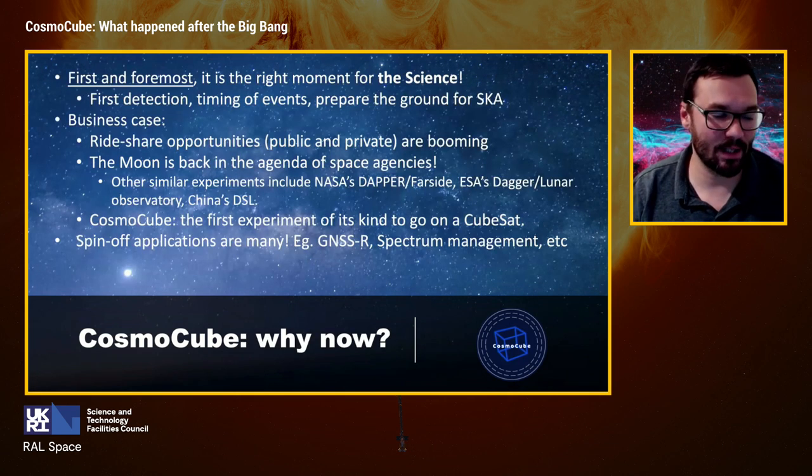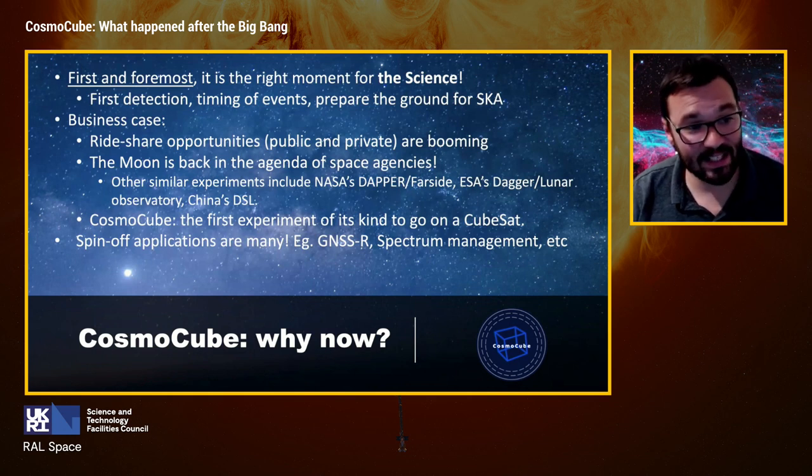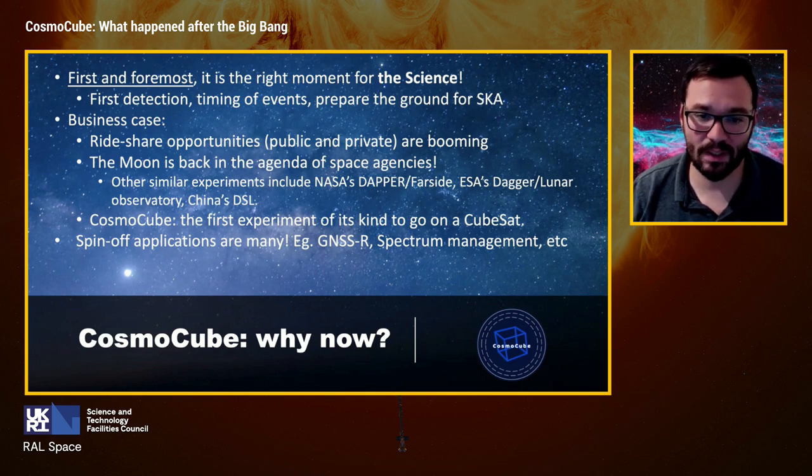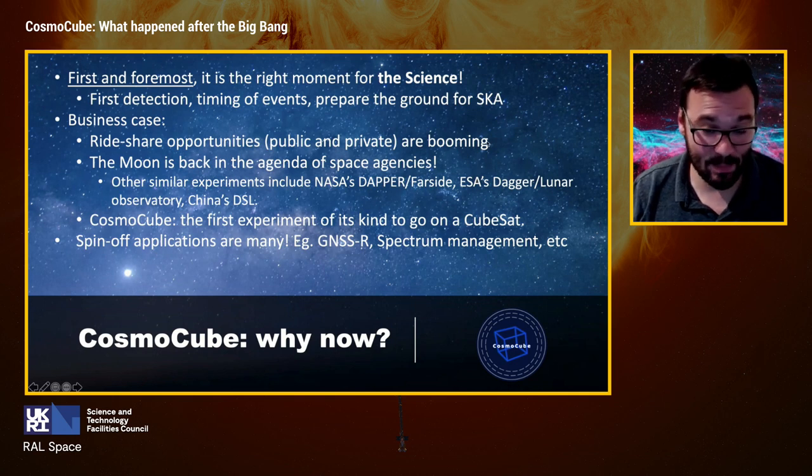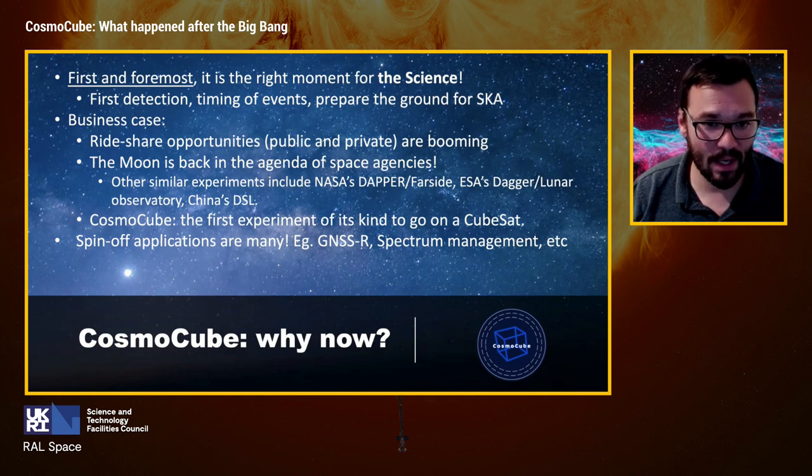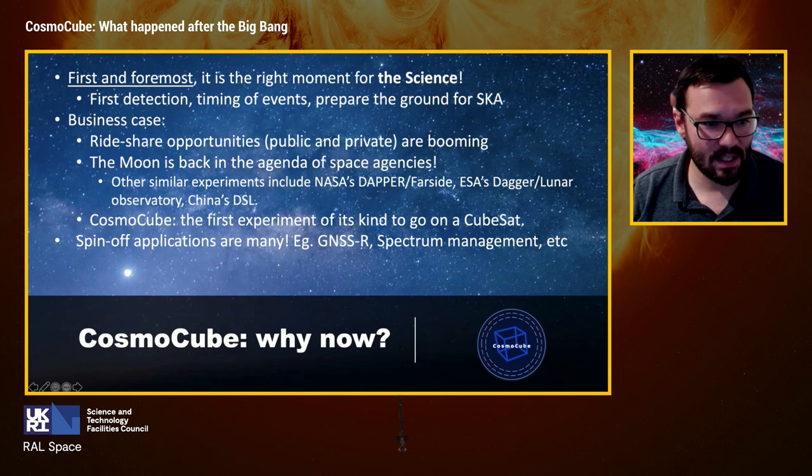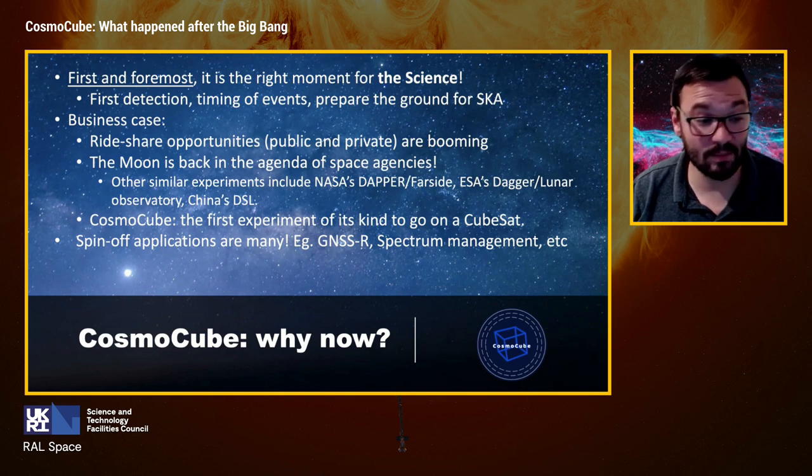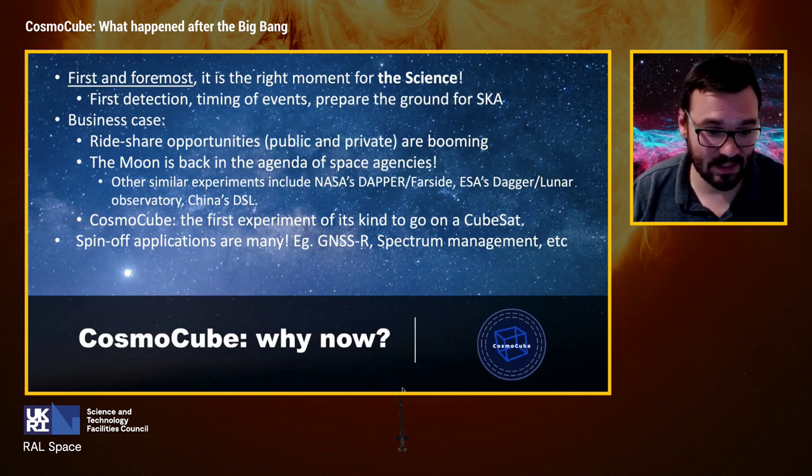Now, why now? Why are we proposing this now? Well, first and foremost, it is the right moment for the science. A first detection, probably happening very soon if it hasn't happened already, needs a confirmation or needs to be detected, that 21-centimeter signal, to be able to time the events and to prepare for what super telescopes, like the Square Kilometer Array, will try to do in the future, like make images of these epochs of the universe. Plus, there is a very strong business case. Riser opportunities, public and private, are booming. The Moon is back in the agenda of space agencies. Similar experiments are being proposed by NASA, ESA, and other countries. With the special note here that CosmoCube is the very first experiment of its kind to go on a CubeSat. Furthermore, there are plenty of spin-off applications of this technology to study Earth, to study the spectral environment of Moon's far side, etc.